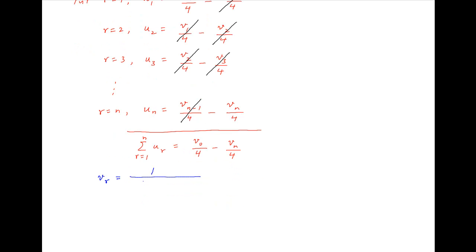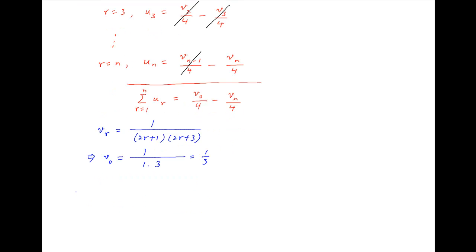Now recall that vr equals 1/((2r+1)(2r+3)). Put r equal to 0: we get v0 equal to 1/(1×3), which equals 1/3. Therefore, the sum of the given series to n terms equals (1/4) times [1/3 minus vn], which is (1/4) times [1/3 minus 1/((2n+1)(2n+3))].